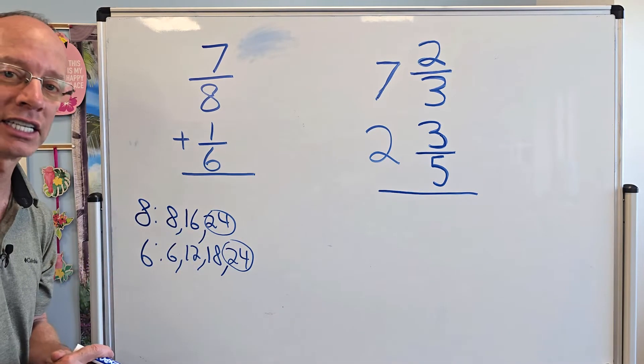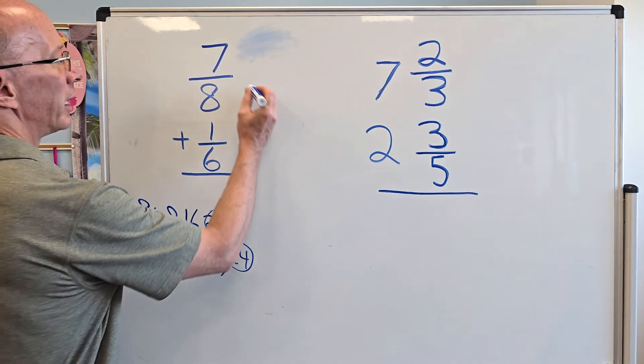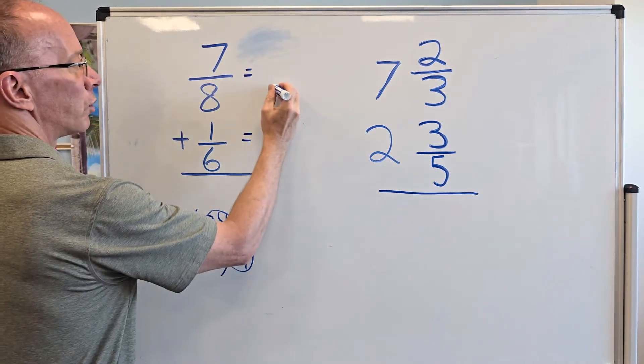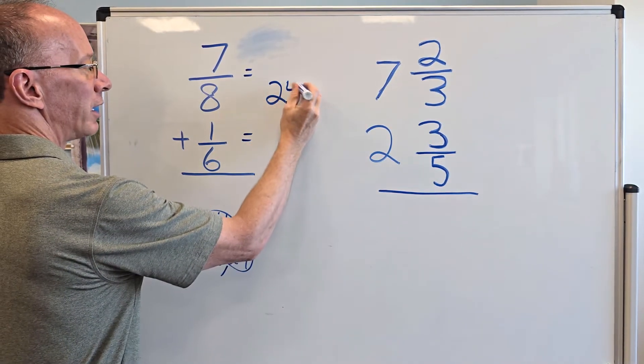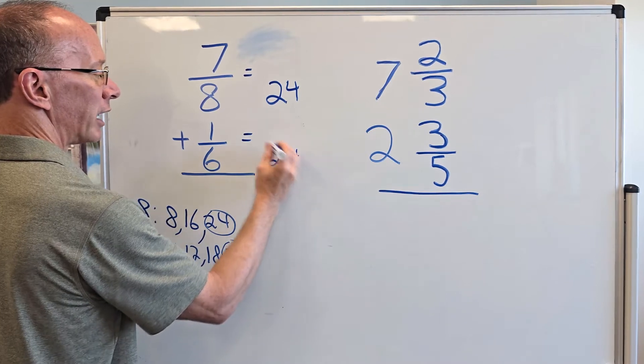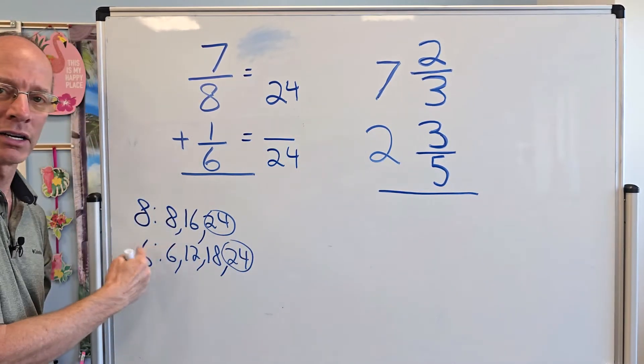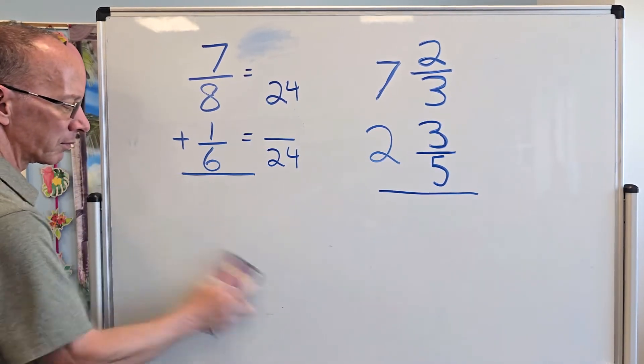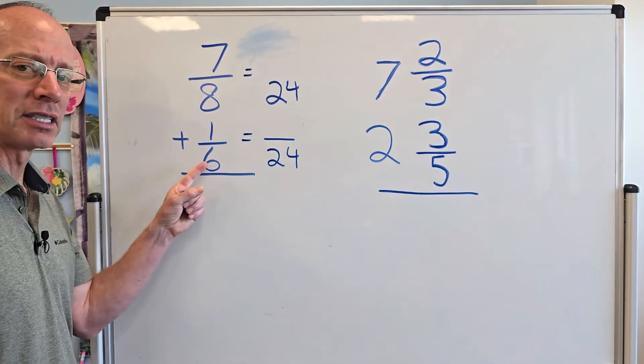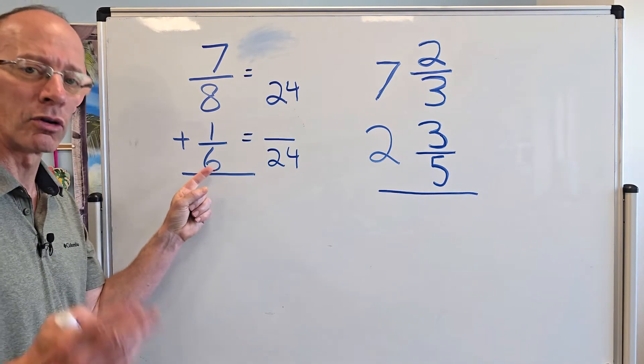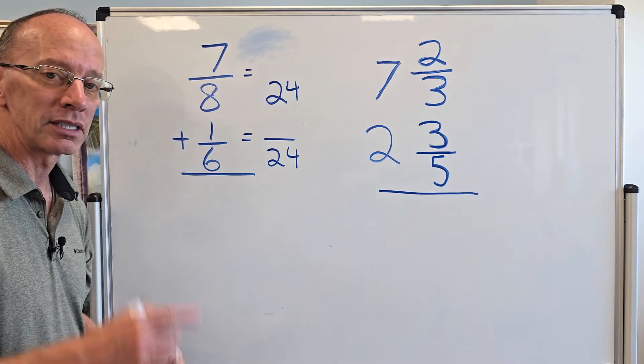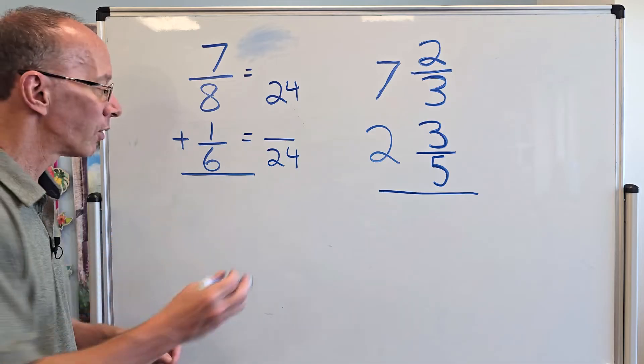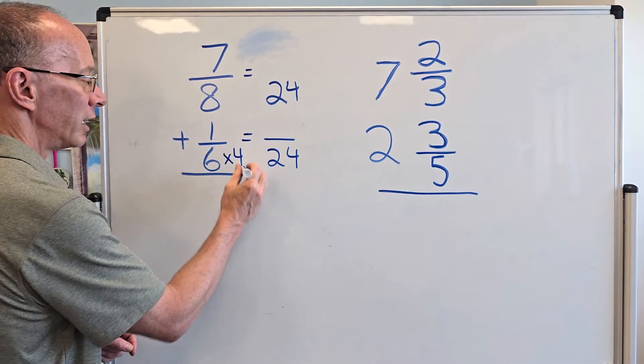So they both share 24 as their least common multiple. And that's what we're going to change the denominator over to. So right now, I'm just going to go ahead and put down an equal sign right here and an equal sign. And I'm going to put down 24 here for my denominator and 24 over here for my denominator. Now, how many times the 6, what do I have to multiply 6 to get to 24?